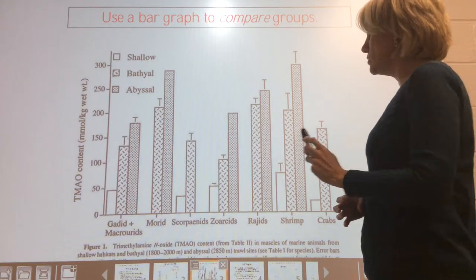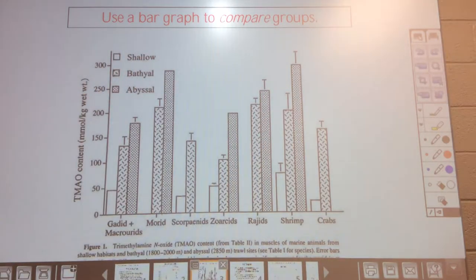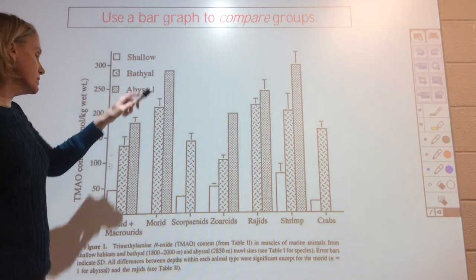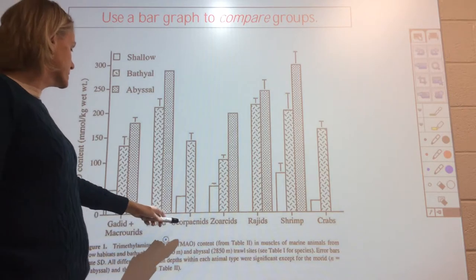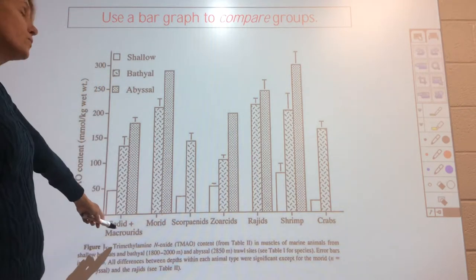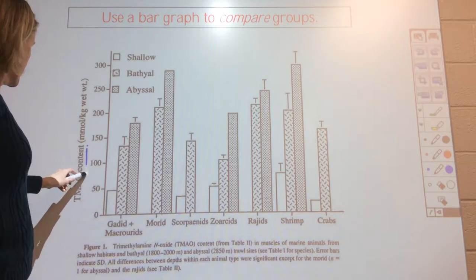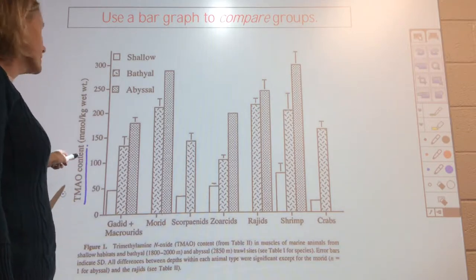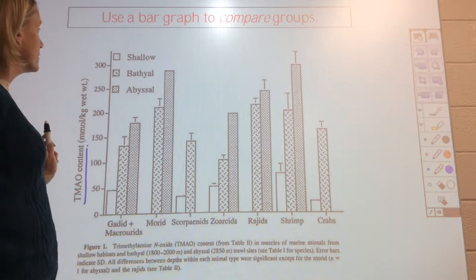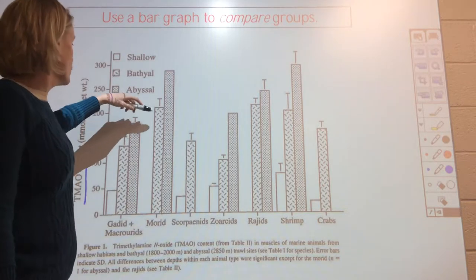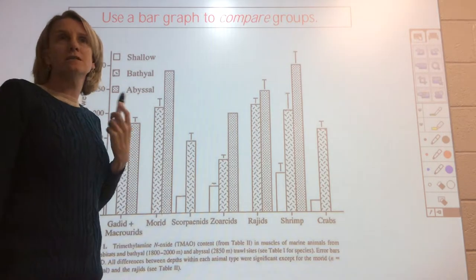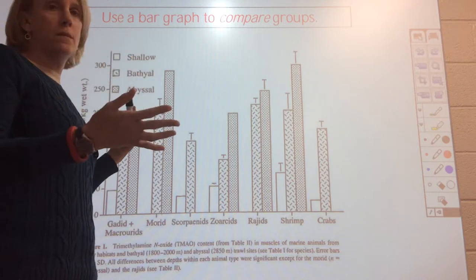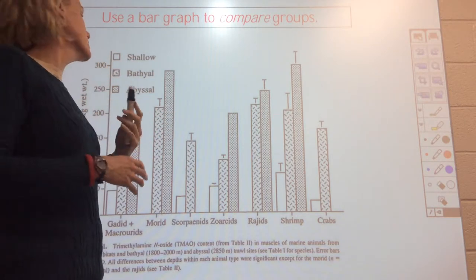We won't use bar graphs right away, but we will use them later in the semester. Bar graphs are used when you're comparing groups — for example, comparing TMAO content across marine organisms. TMAO is a compound that sharks use to osmoregulate. You'd also use a bar graph when comparing a treatment to a control, or treatment A to treatment B — any time you're looking at different groups.